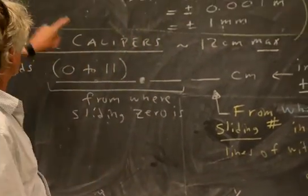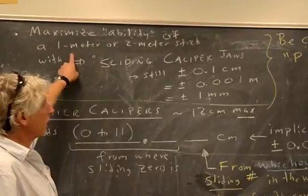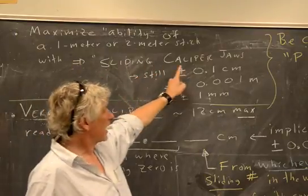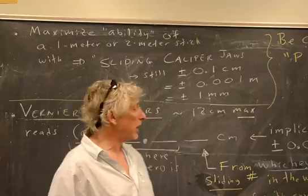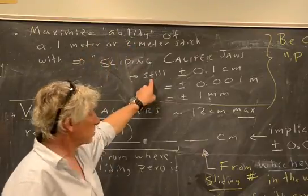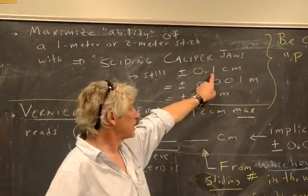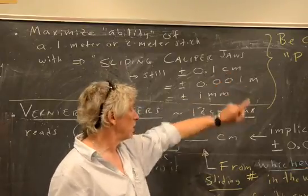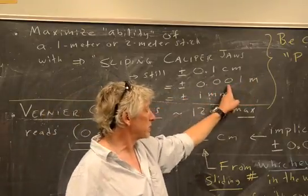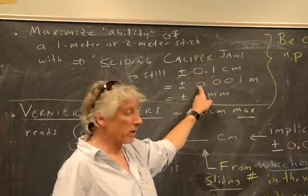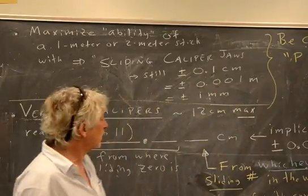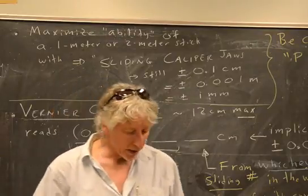So what I'm talking about here is maximizing the ability of a one meter or two meter stick. And we can do that with sliding caliper jaws. Think of a caliper, the jaws grabbing. Now it's still going to be your meter stick, so you're still going to have an uncertainty of plus or minus a tenth of a centimeter, because ten marks in one centimeter. Which is the same as plus or minus 0.001 meter, or a millimeter. So we can use these sliding caliper jaws, and that's pretty nice.